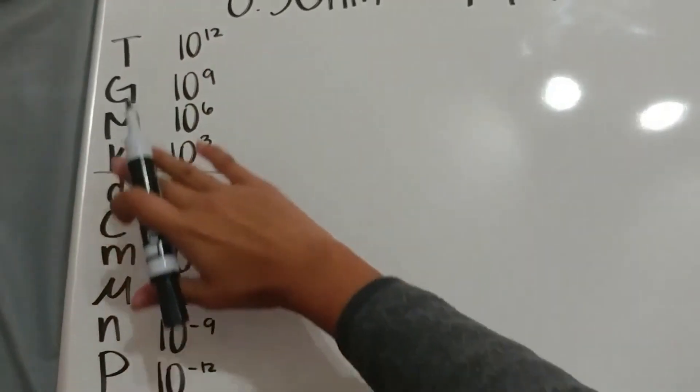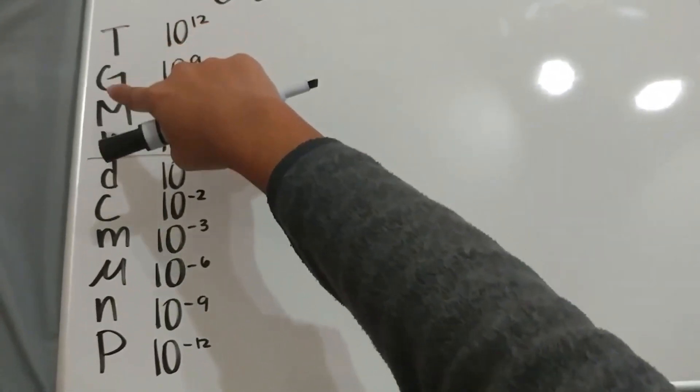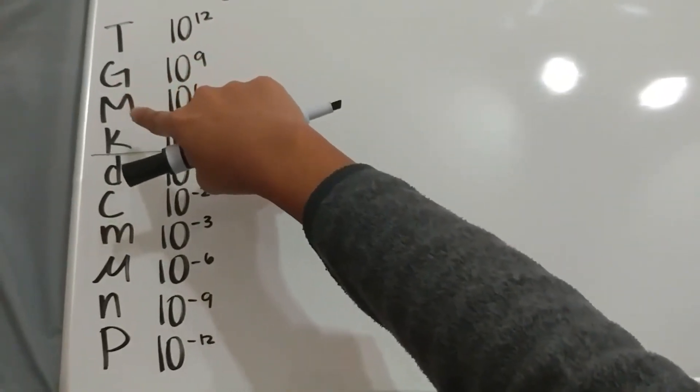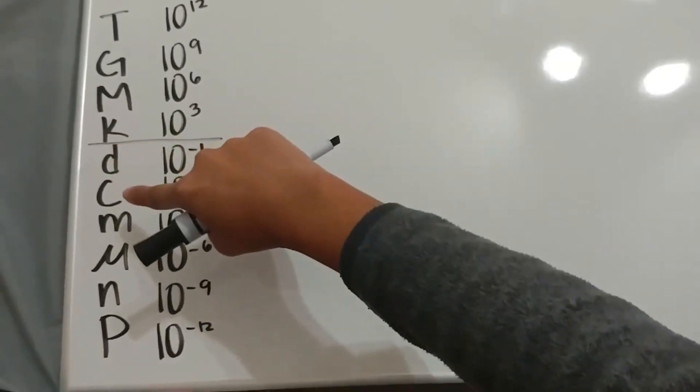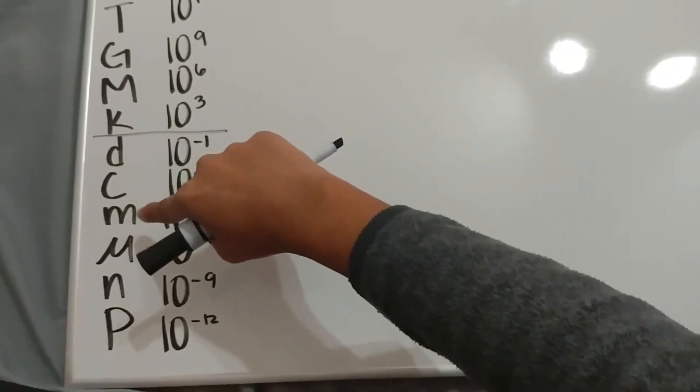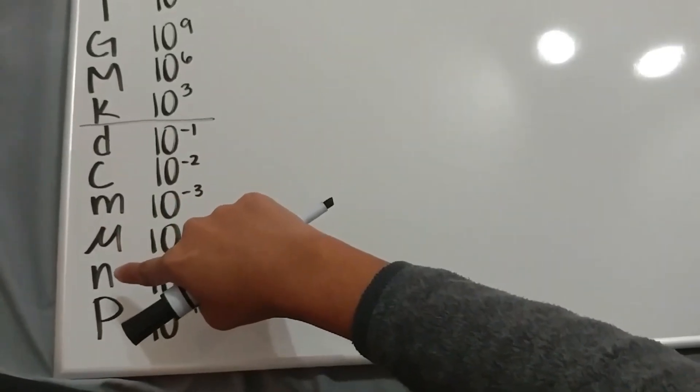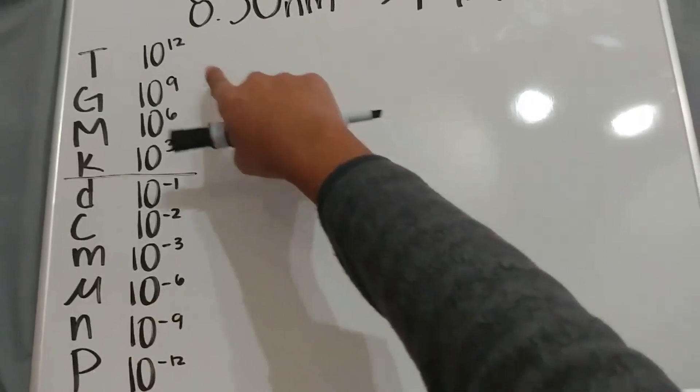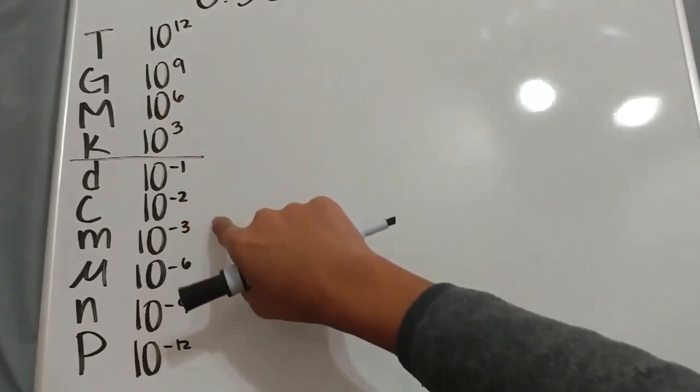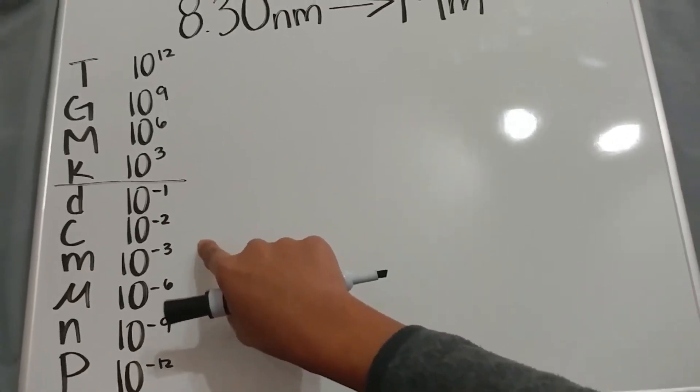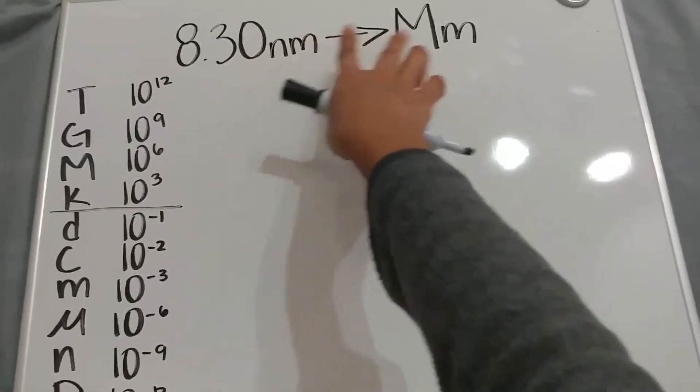So as you see here, I have written down the symbols of the prefixes. So t stands for terra, g stands for giga, m stands for mega, k stands for kilo, d stands for deci, c stands for centi, lowercase m stands for milli, mu stands for micro, n stands for nano, and p stands for pico. And next to each symbol is the corresponding scientific notation, which we will be implementing into our conversion factors from nanometers to megameters.